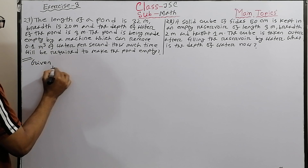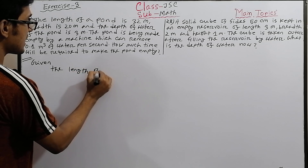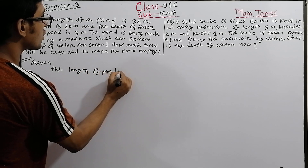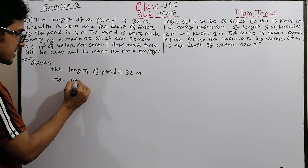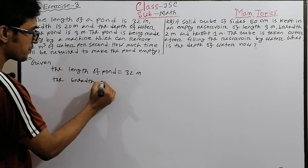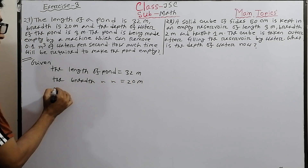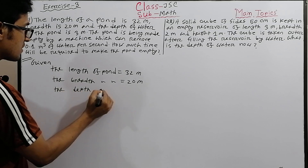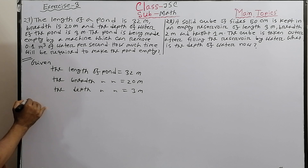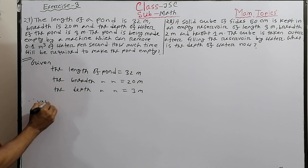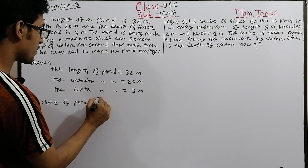Given data: the length of the pond is 32 meters, the breadth of the pond is 20 meters, and the depth of the pond is 3 meters. So now I can take the volume of the pond.